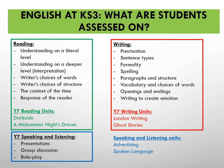At Key Stage 3, students are assessed in three areas: reading, writing, and speaking and listening. In reading, students are taught to understand text at a literal level, understand them on a deeper level, explore writers' choice of words and their choice of structure, the context in which texts have been written, and the response of the reader.